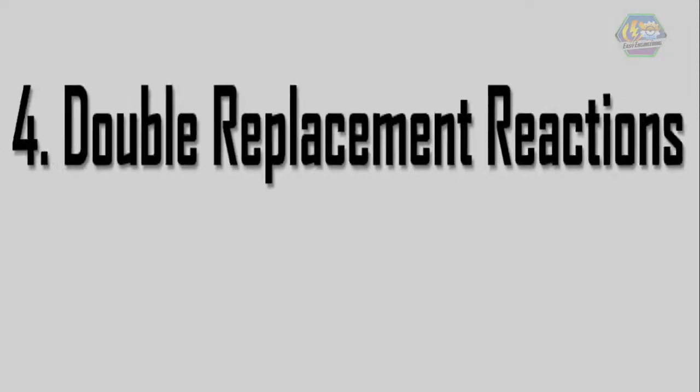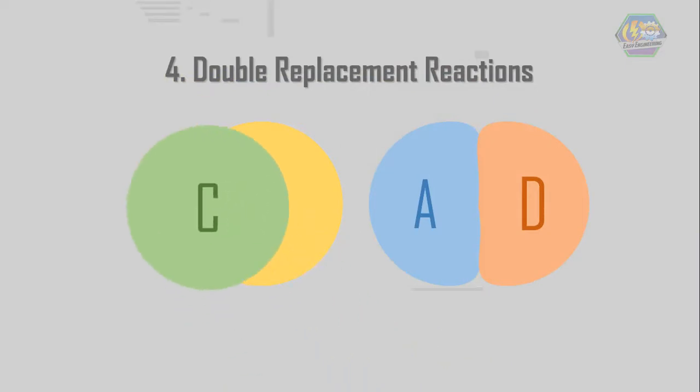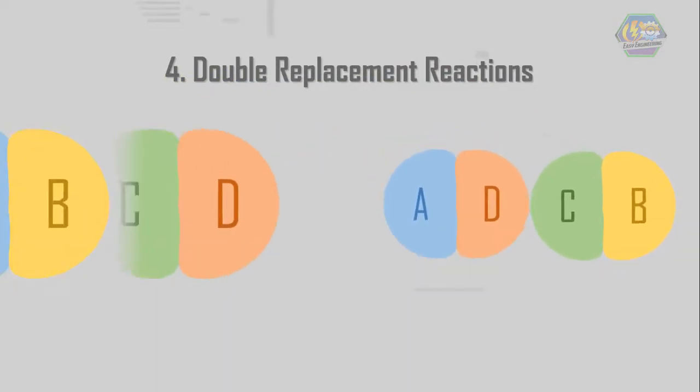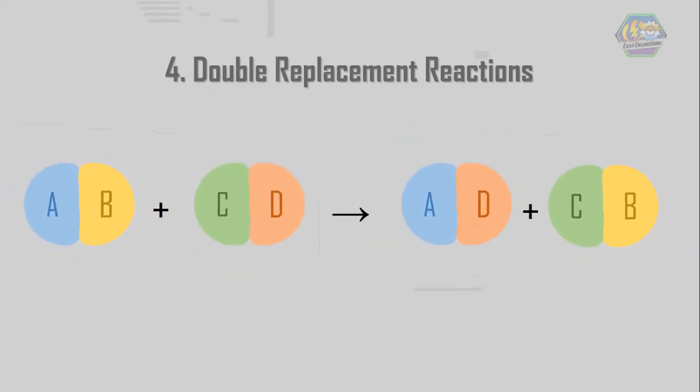4. Double Replacement Reactions. It occurs when a compound reacts with another compound to form two new compounds. Its general formula is AB plus CD yields AD plus CB.